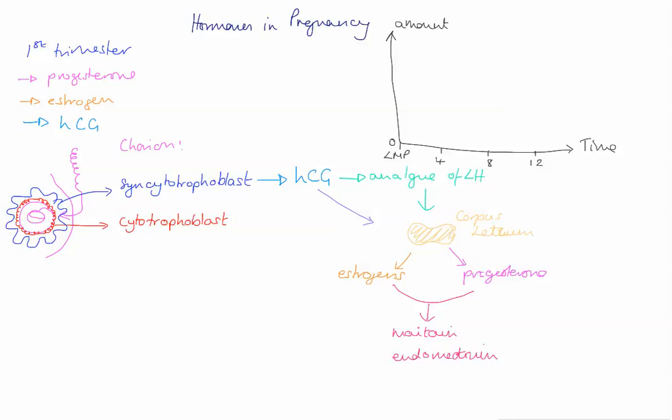And then we see the egg is ovulated around week 2. And if it is successfully fertilized, it will embed into the endometrium within 5 to 7 days. So roughly around week 3.